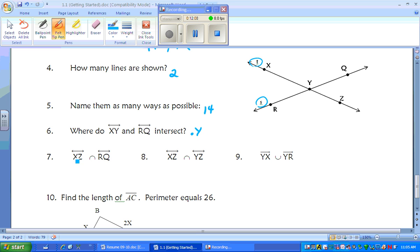Seven. Line XZ, so we're looking at line XZ. We want the intersection because it's the N shape, so intersection of line RQ. Well, where do these intersect? They intersect at point Y.